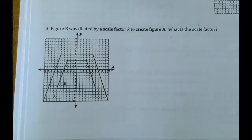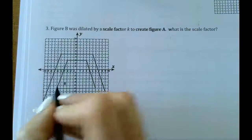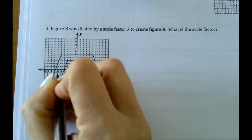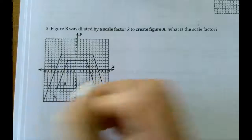It looks like B is our original because it says figure B was dilated to get figure A. So figure B is our original. So let's just pick out a point there. It looks like if I pick out this point, it's at negative 6, positive 6.